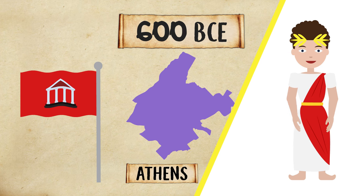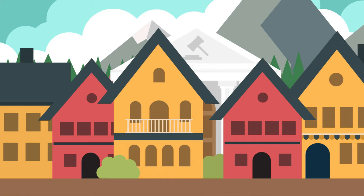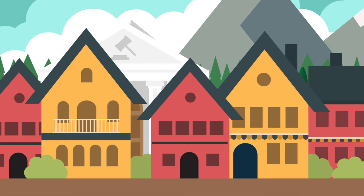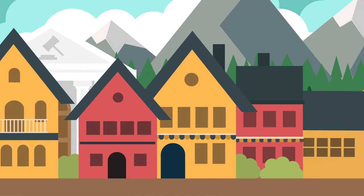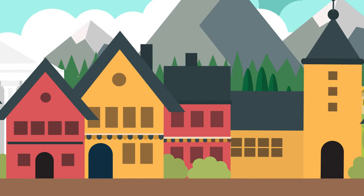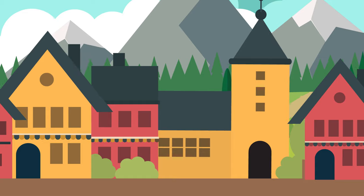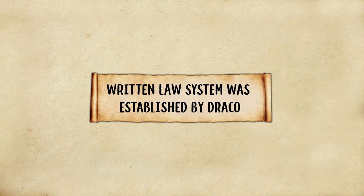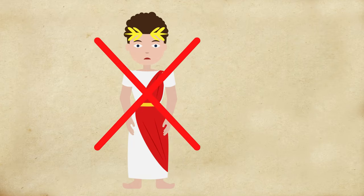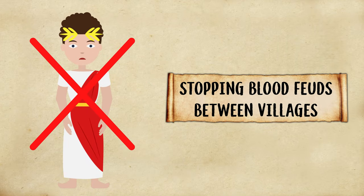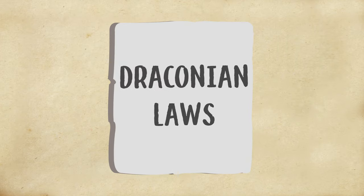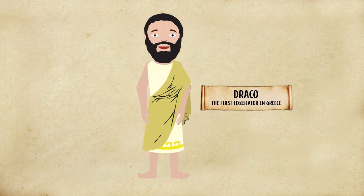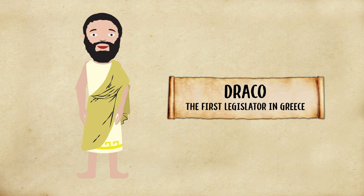Rather than following a king traditionally born into leadership, Athens became a polis — a city-state that included several villages and small cities that banded together for protection and trade. Later, an organized, written law system was established by Draco in the hopes of ending the king's reign and stopping blood feuds between villages. Draconian laws were chiseled onto stone tablets, and Draco was the first legislator in Greece, though his laws were very harsh by today's standards.